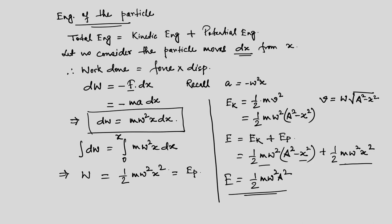We can write down the expression for omega in terms of frequency f, and further simplify: the total energy equals 2π squared m f squared A squared. That is the expression for total energy in terms of frequency in hertz. This is left as an exercise. Now, if we move forward, let us consider a simple pendulum.